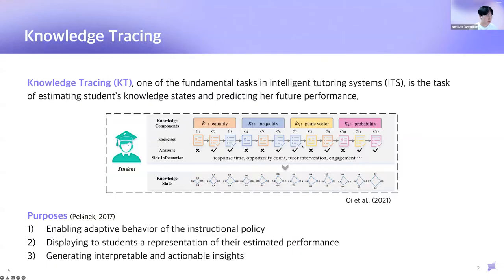So first of all, for those unfamiliar with the knowledge tracing task, I will briefly explain what knowledge tracing is and how it works. Knowledge tracing is one of the fundamental tasks in intelligent tutoring systems. Given a learning history of students, knowledge tracing estimates student knowledge states, as shown in the series of radar charts here. In our discussion, knowledge states represent student proficiencies for particular knowledge concepts, for example, equality, inequality, and so on.